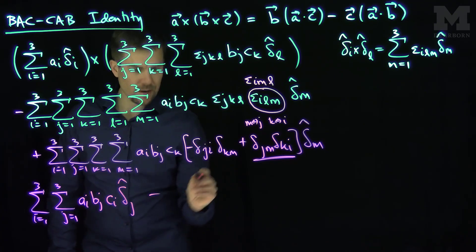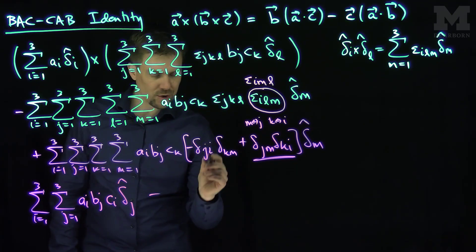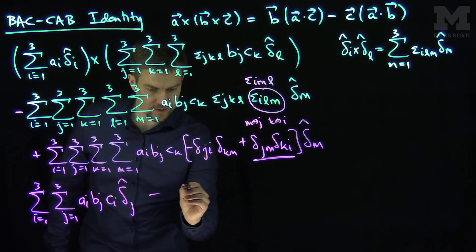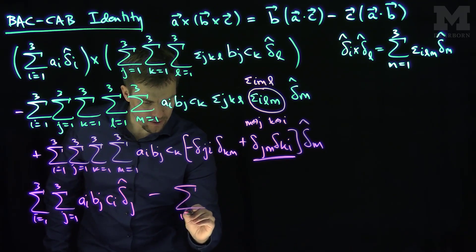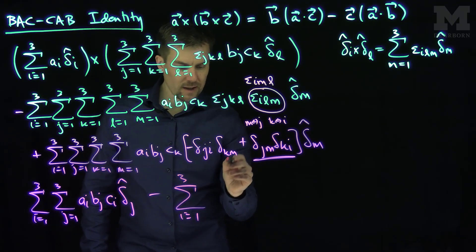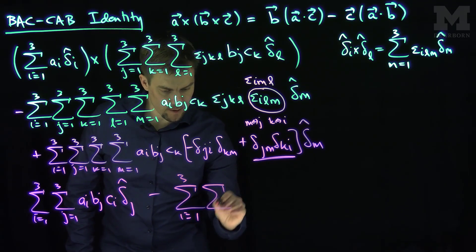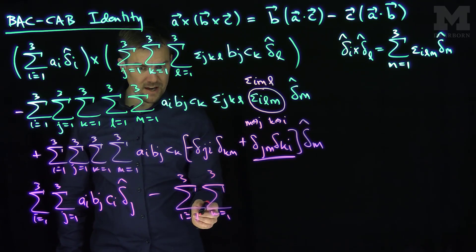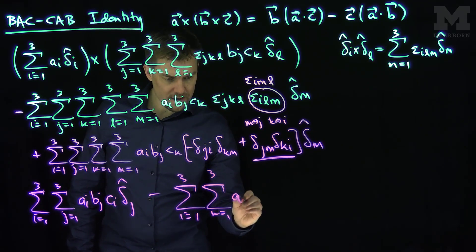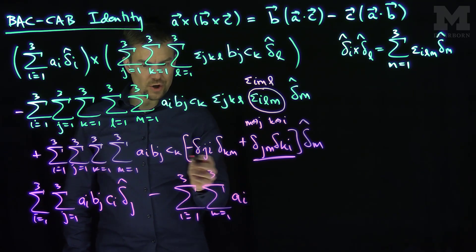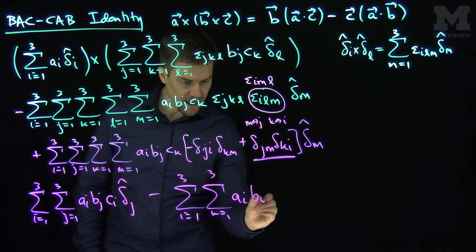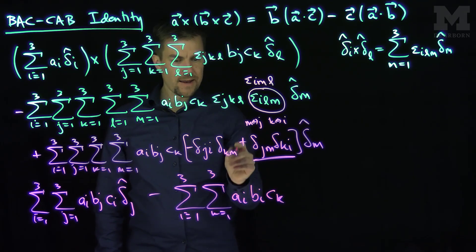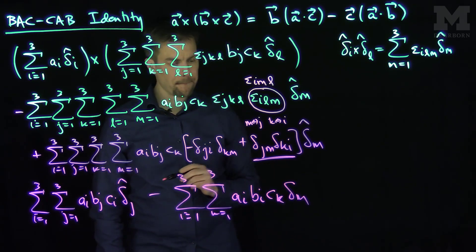For the negative terms, i must equal j, so we keep the sum over i and k from 1 to 3. Everywhere j appears it's replaced by i, giving a_i times b_i. And k stays k, giving c_k. The index m gets replaced with k, so this is in the direction of delta-k hat. The negative term is thus minus the sum over i of a_i b_i, times the sum over k of c_k delta-k hat.